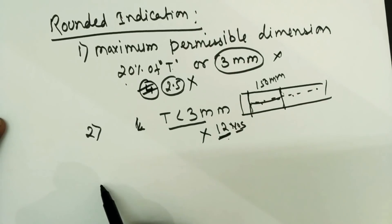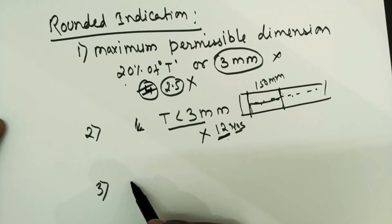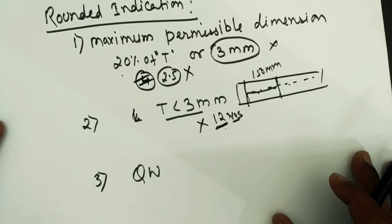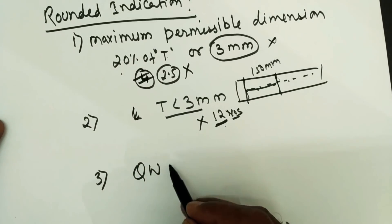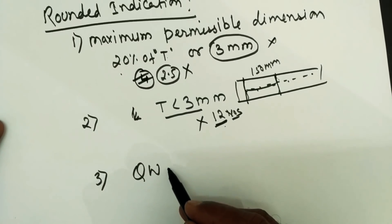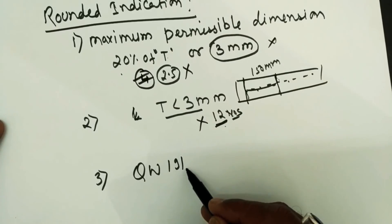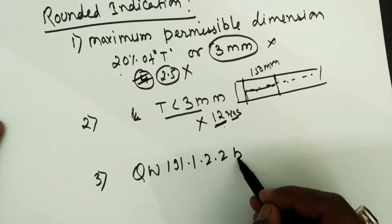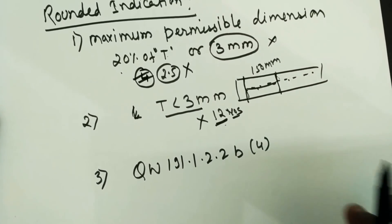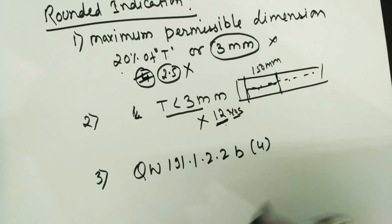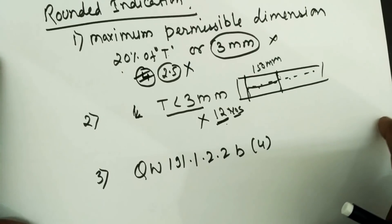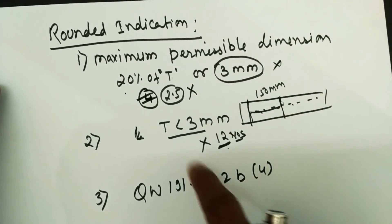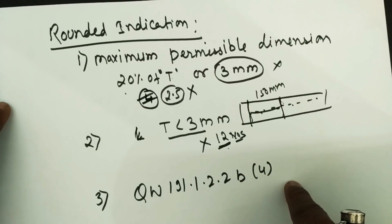The third criteria: ASME Section 9 provides figures in QW-191.1.2.2b4, showing patterns according to which you can accept or reject the test coupon. This is what ASME Section 9 has specified for rounded indication.